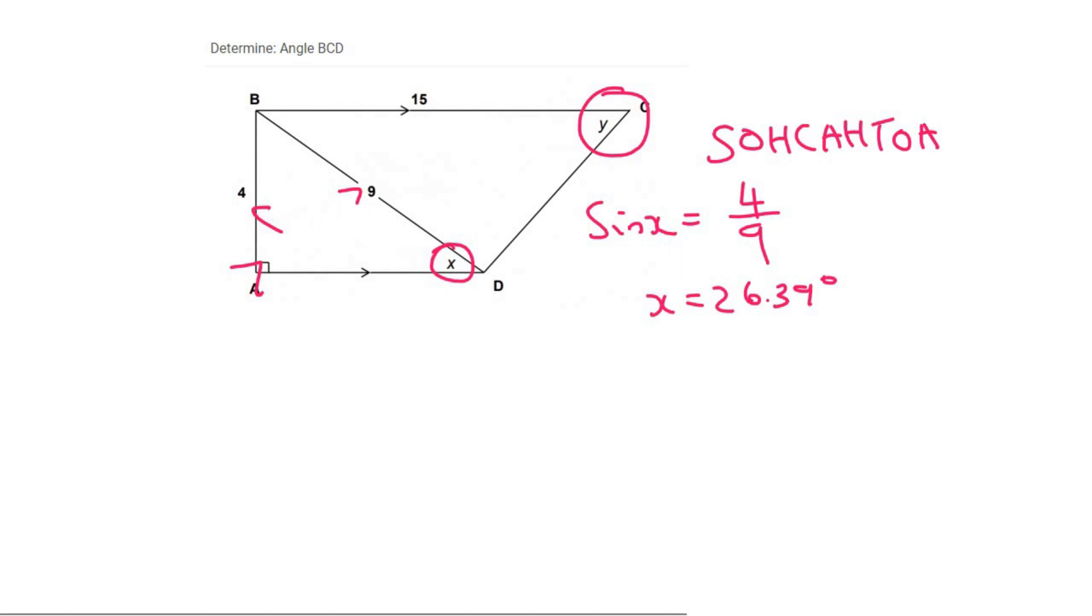So then I could use alternating angles. So I could say that angle DBC is also going to be 26.39 degrees because of alternating angles, due to the fact that BC is parallel to AD. So now we have 26.39 over here.